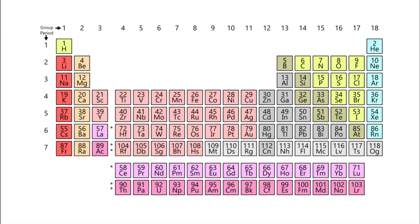So let's start with the periodic table. The periodic table of elements is a diagram that arranges all of the chemical elements in order of atomic number. For example, our first element has an atomic number of one and it's hydrogen. That's followed by helium with an atomic number of two, then lithium with atomic number three, beryllium with atomic number four, and so on — all the way up to element number 118.